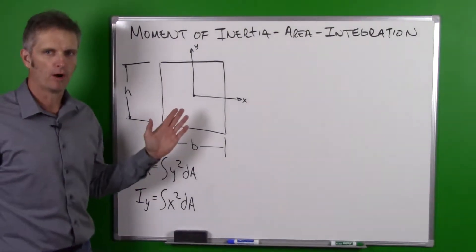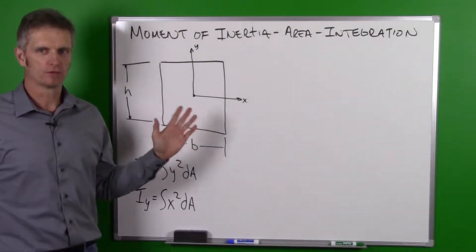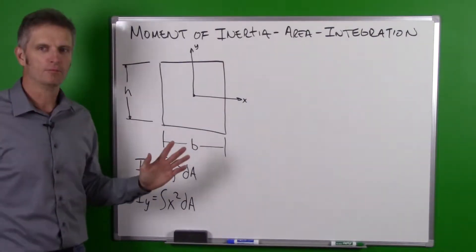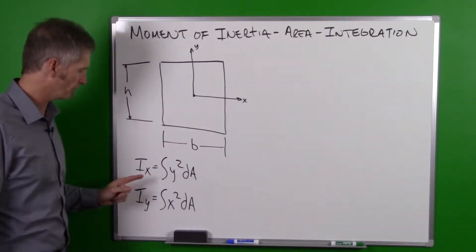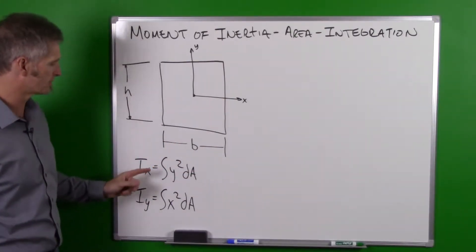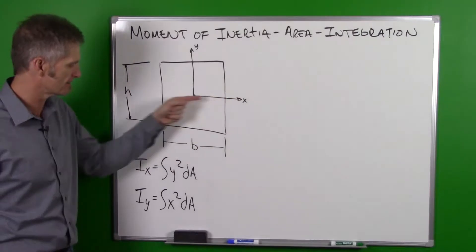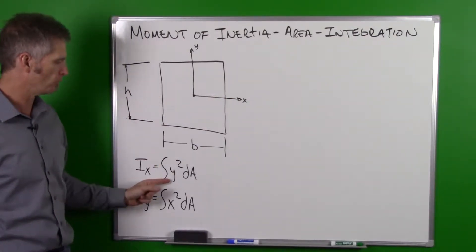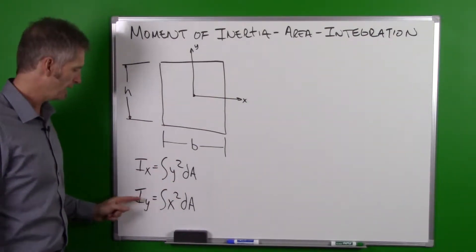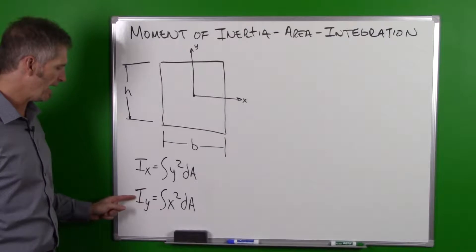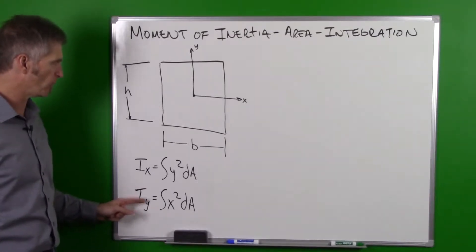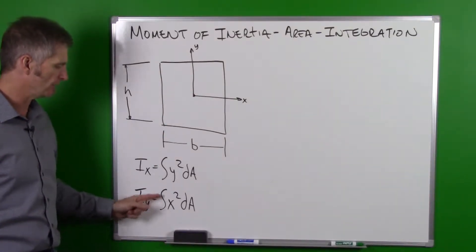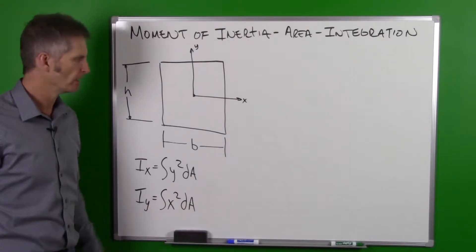We need to remember our equations for the moment of inertia, or second moment of area. Ix, the moment of inertia about the x-axis, is equal to the integral of y² dA, and Iy, the moment of inertia about the y-axis, is equal to the integral of x² dA.